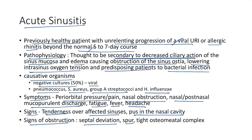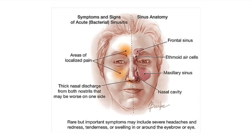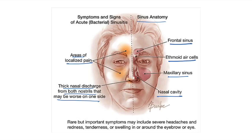Sinus anatomy: the various sinuses include the frontal sinus, ethmoid cells, and maxillary sinus. Clinical features include localized pain areas, thick nasal discharge from both nostrils worse on one side, severe headache, and possible redness, tenderness, or swelling around the eyebrows and eyes.